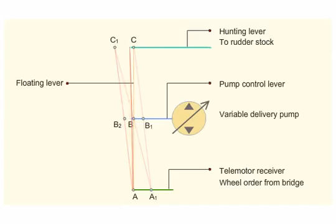As the rudder moves to midship, the hunting lever moves to C, bringing the pump control rod back to B, stopping the pump discharge.